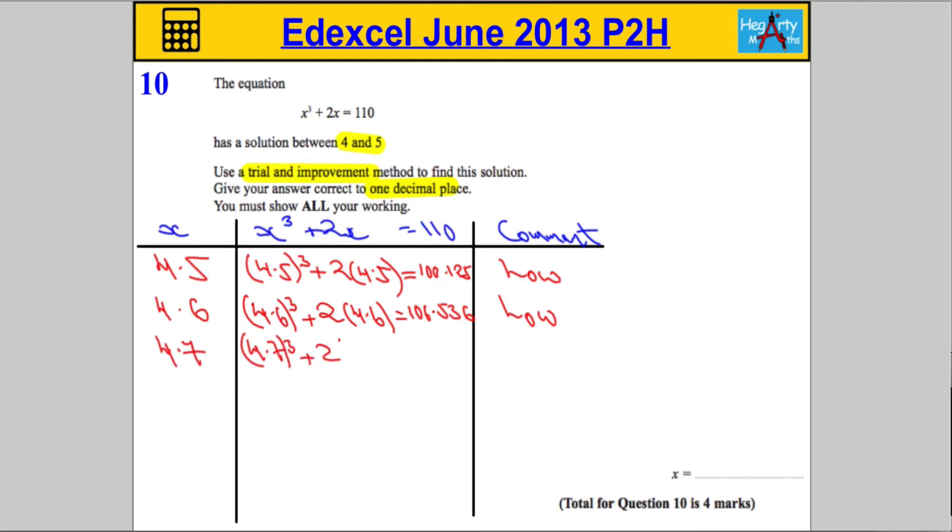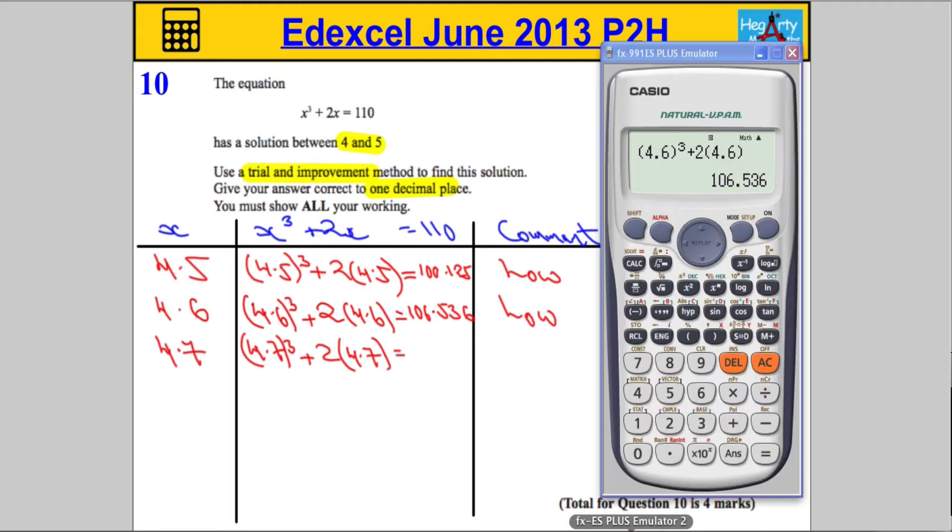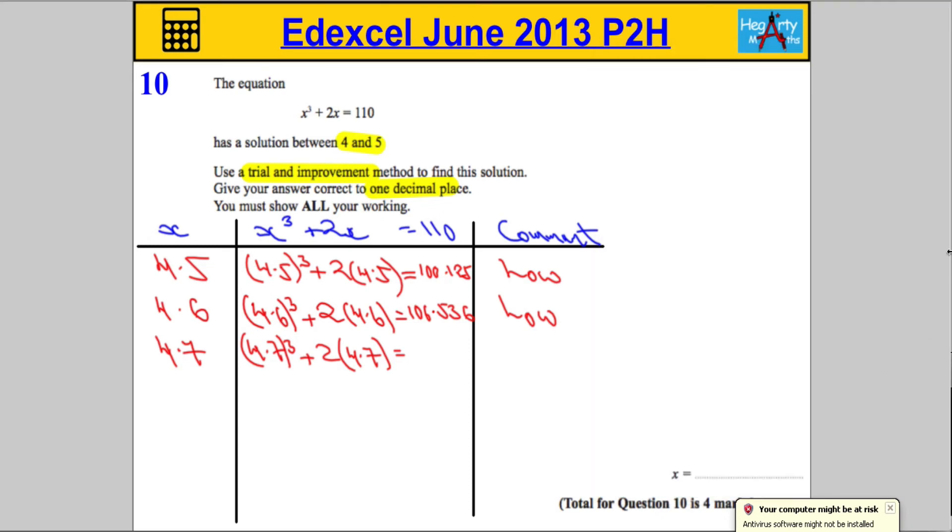It equals, get that into your calculator nice and quick. So change that to a seven, and going back here let's change this to a seven. I suspect this might be too big. It is indeed 113.223.